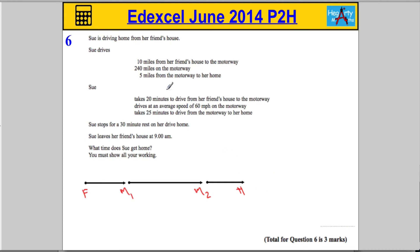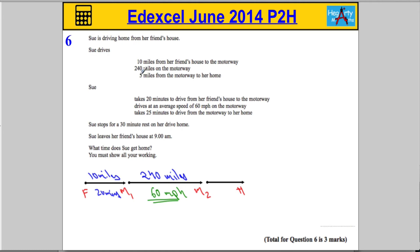It's 10 miles from her friend's house to the motorway, so we know the distance from F to M1 is 10 miles, and we know it takes 20 minutes. The motorway is 240 miles long, and she drives at an average speed of 60 miles per hour. Then it's 5 miles from the motorway to her home, and it tells us she takes 25 minutes for that part of the journey.